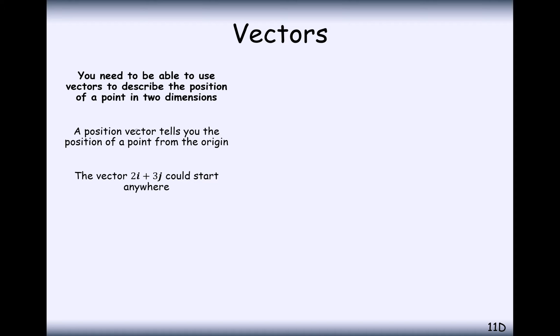A position vector tells you the position of a point from the origin. So it's not just a direction vector, it can be a position coordinate as well. The vector 2i plus 3j could start anywhere, so that's just a vector that refers to 2 to the right and 3 up. It could start anywhere though.